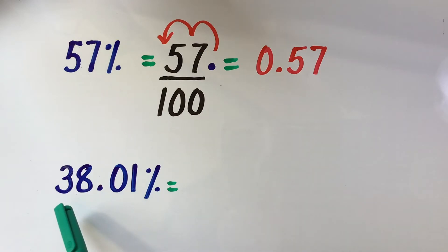In this example, we need to convert 38.01% into a decimal. Again since 38.01% is less than 100%, we know for sure that the answer for this will also be less than 1.